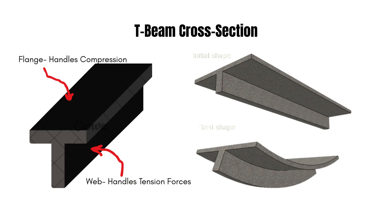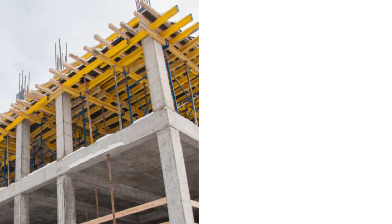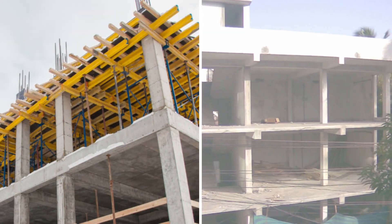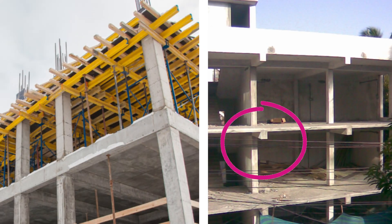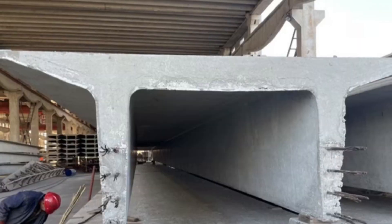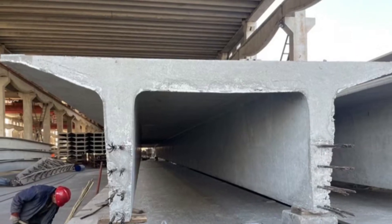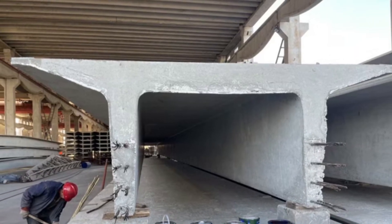In a T-beam, the slab contributes to resisting compression, while the web handles tension and shear. This shared action between the slab and the beam leads to better load distribution and high flexural strength, especially for floor systems, multi-storied buildings, and bridge decks.